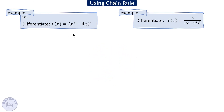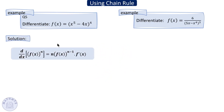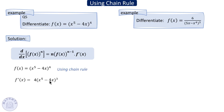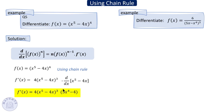For the first question, apply the result: the outside function is the bracket to the power four, so the derivative is four times the bracket to the power three, times the derivative of what's inside the bracket. For the second question, rewrite the expression using a negative power so the denominator moves up, allowing us to use the power rule.